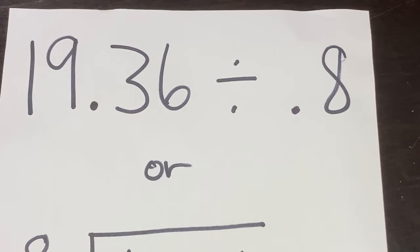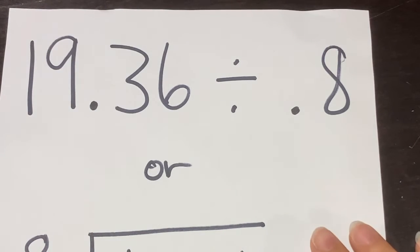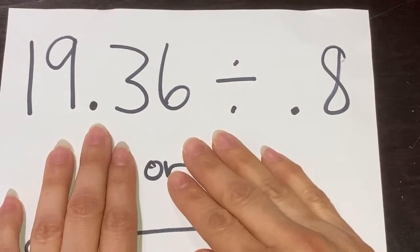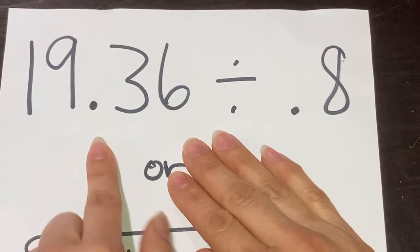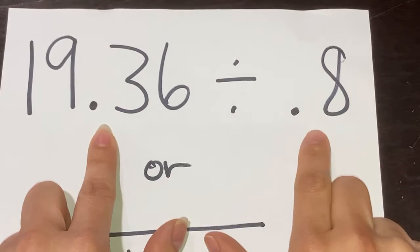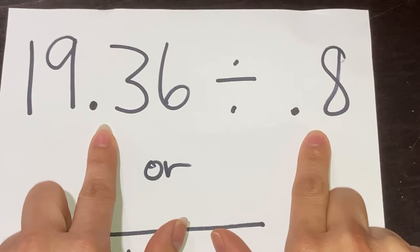Today we're going to be doing a division problem using the counting method. This time it's a little different because we have decimal points both in the dividend and in the divisor.